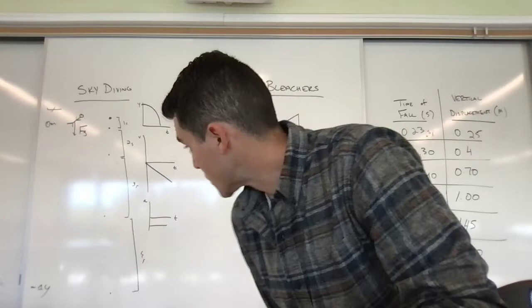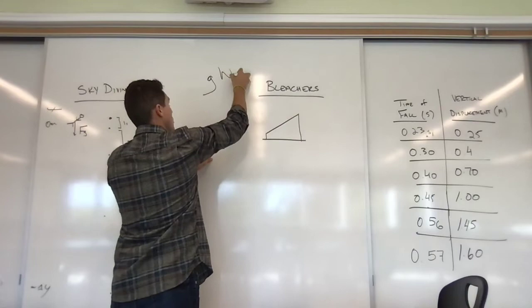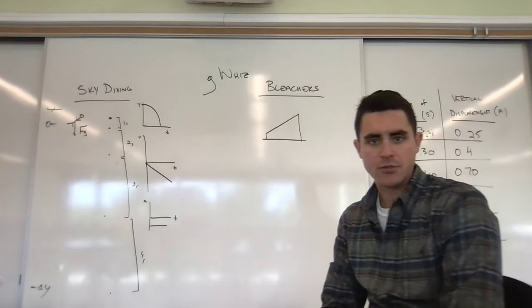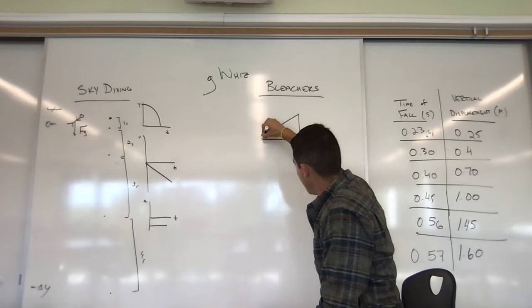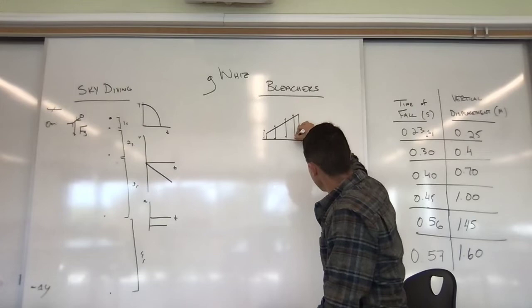And we went out to the bleachers and we dropped these objects. So here's what we did. We took different objects for different groups, but all had very low surface area to mass ratios. And we dropped them. We dropped them from various heights. We dropped them from here, from here, all the way up to the bleachers, all the way to the top of the home bleachers. So we dropped them and we timed them.